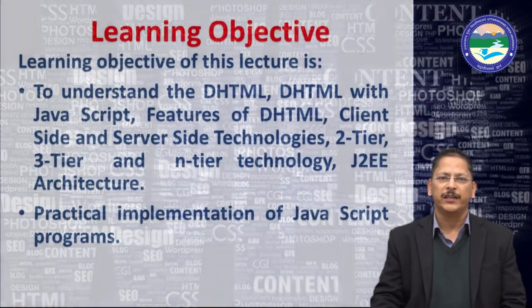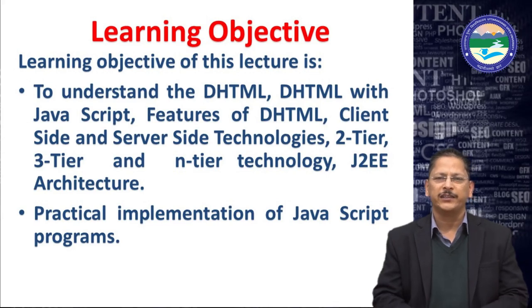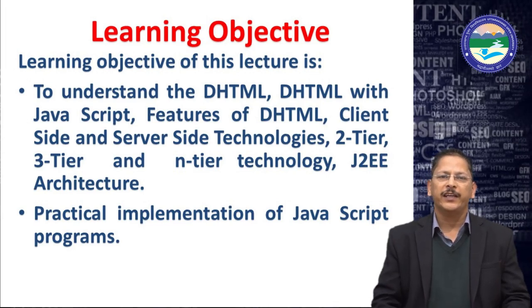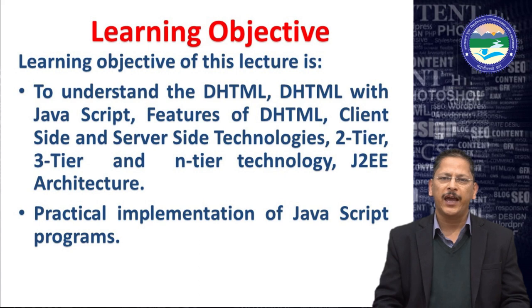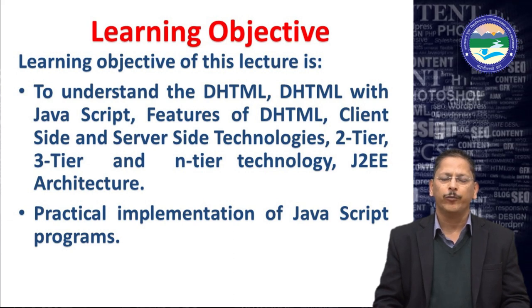In the previous lecture, we discussed XML cascading style sheets. The learning objectives of this lecture are to understand DHTML, DHTML and JavaScript, features of DHTML, client-server side technologies, two-tier, three-tier and N-tier technology, J2EE architecture, and practical implementation of JavaScript programs.